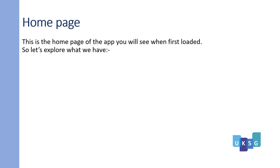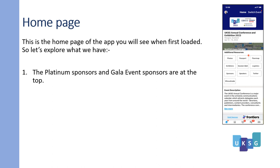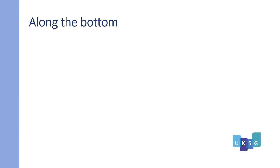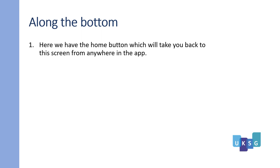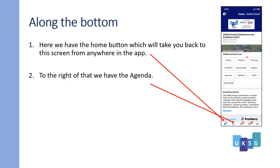This is the home page of the app you will see when first loaded. Let's explore what we have. The platinum sponsors and Gala event sponsors are at the top, with all the sponsors scrolling at the bottom. Along the bottom of the home page we have the home button, which will take you back to this screen from anywhere in the app. To the right of that we have the agenda.